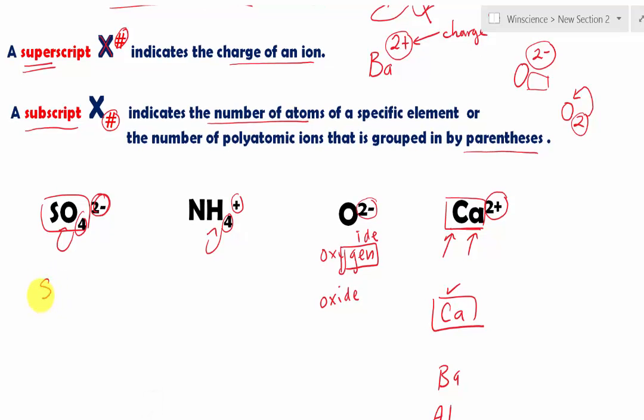So we're just going to type in SO4. Then we're going to use the caret symbol to represent that the charge is flying above the rest of the formula with a two minus. So that's how you type in your answer. Okay?